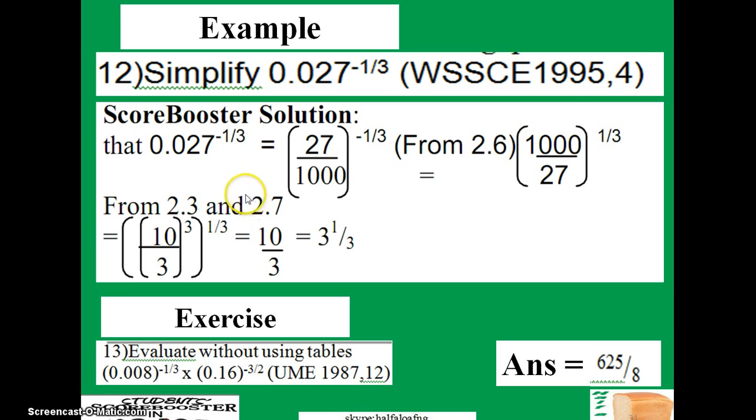So you can also combine rules 2.3 and 2.7 to factorize 1000 and 27. 1000 is the same as 10 raised to power 3, and 27 is the same as 3 raised to power 3.